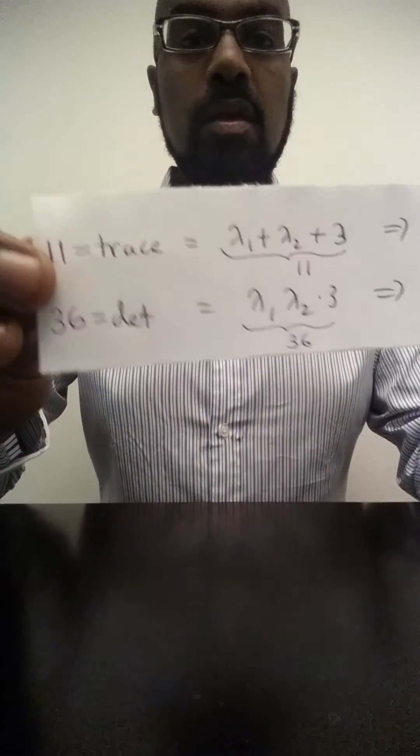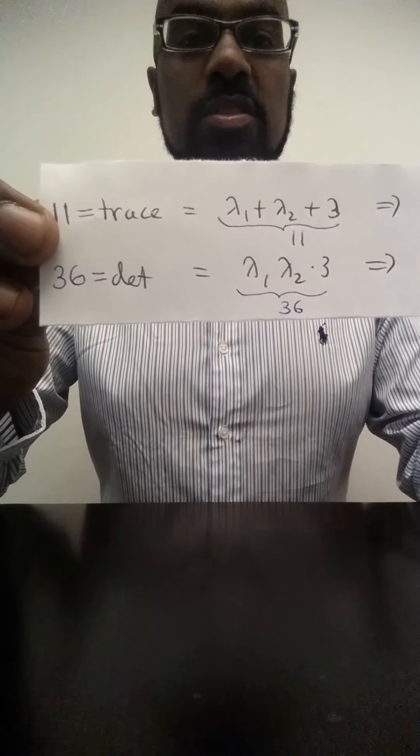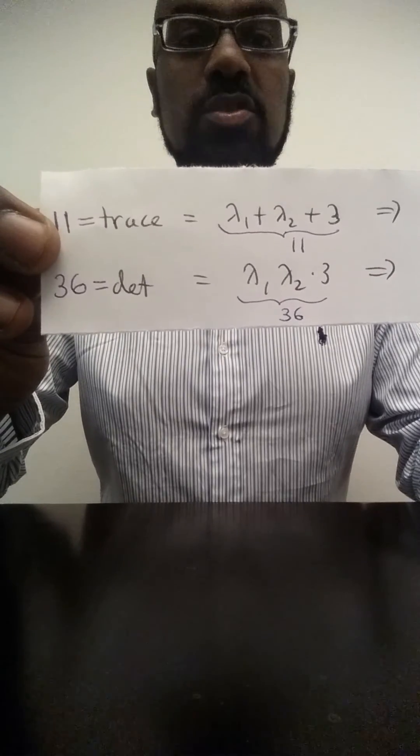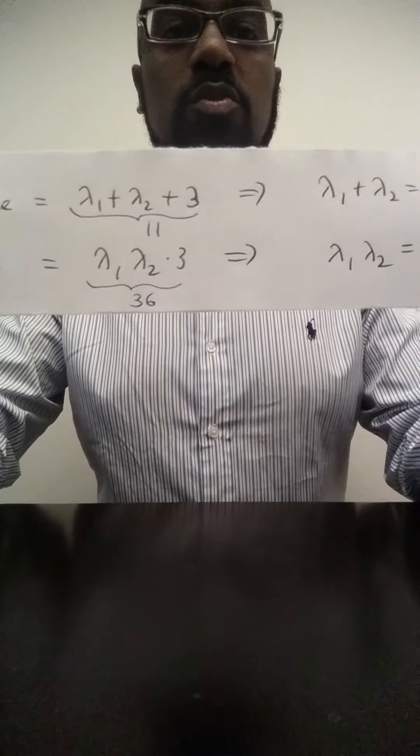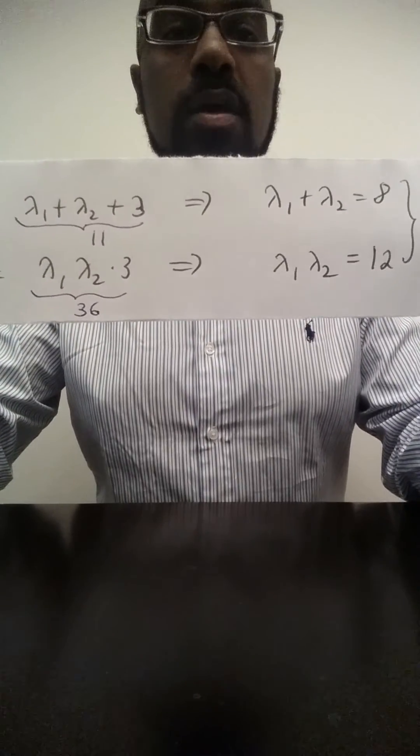Okay, great. So the trace of the matrix was 11 and so the sum of lambda 1, lambda 2, and 3 is 11 whereas the product of lambda 1, lambda 2, and 3 is 36. And so we have two equations in the two unknown eigenvalues. Their sum is 8 and their product is 12.